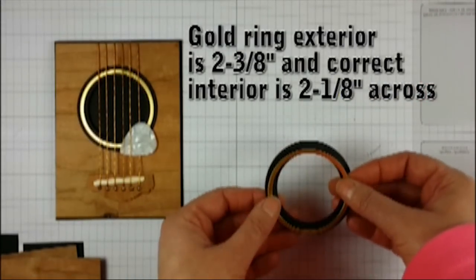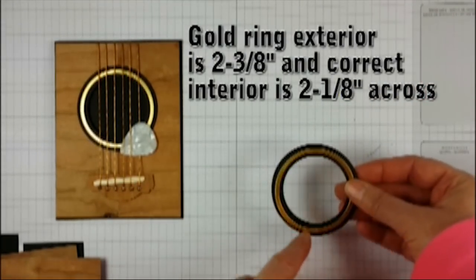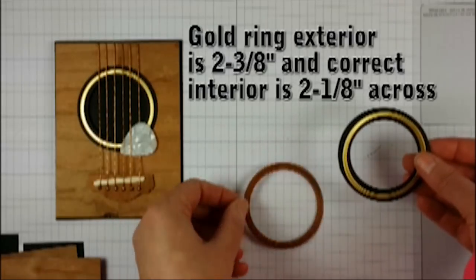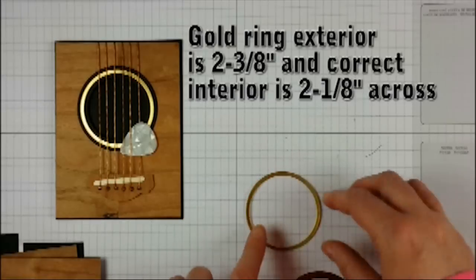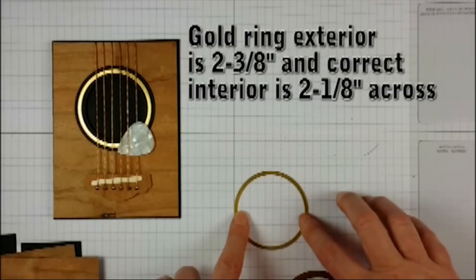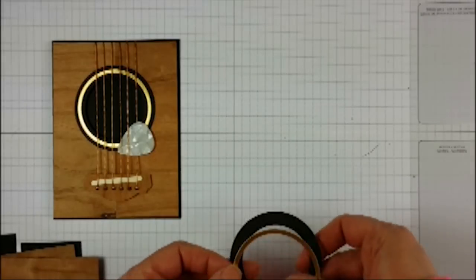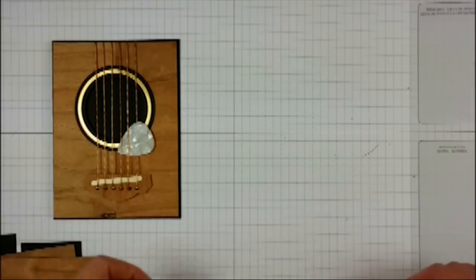The narrower ring, the gold ring, the outer edge is the same size. You're going to glue those together.